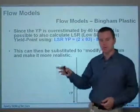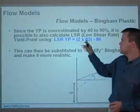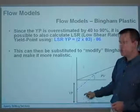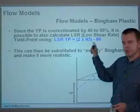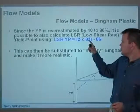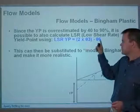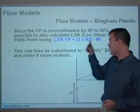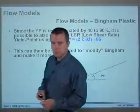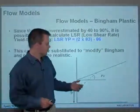LSRYP, or low shear rate yield point, equals 2 times theta 3 minus theta 6. So that's your lower shear rates as measured on the Fann viscometer, the Fann rheometer. You've got 2 times theta 3 minus theta 6, as opposed to 2 times theta 300 minus theta 600. So this can actually be substituted to modify Bingham and make it more realistic.